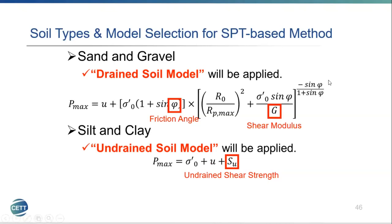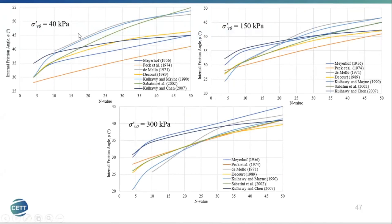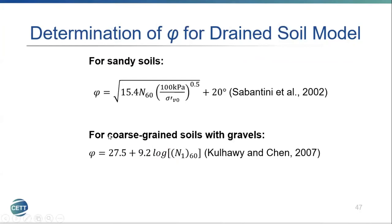For the determination of friction angle for the drained soil model, I looked at multiple correlations that vary by effective stress, since SPT is affected by overburden stress. I wanted to select a reasonably conservative model — not too conservative, but not overestimating either. For sandy soil, one correlation was selected, and for coarse-grained soil with gravel, a different one was chosen.